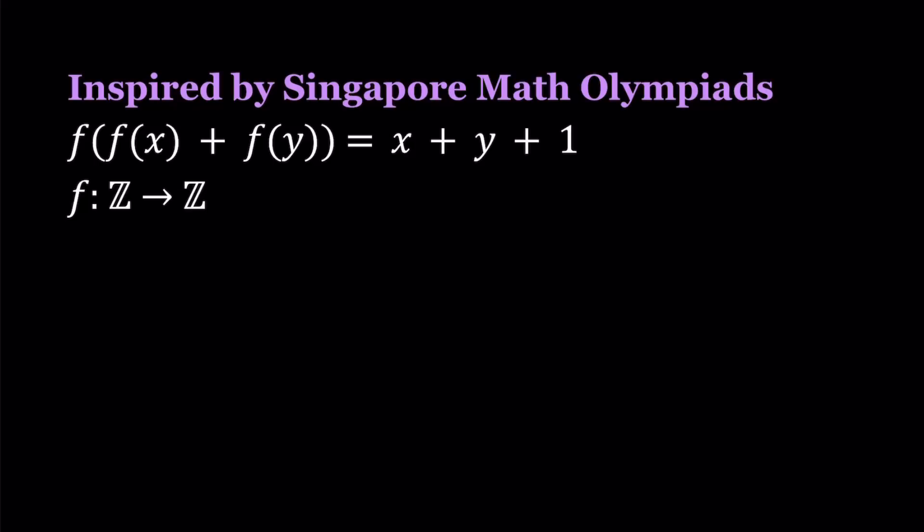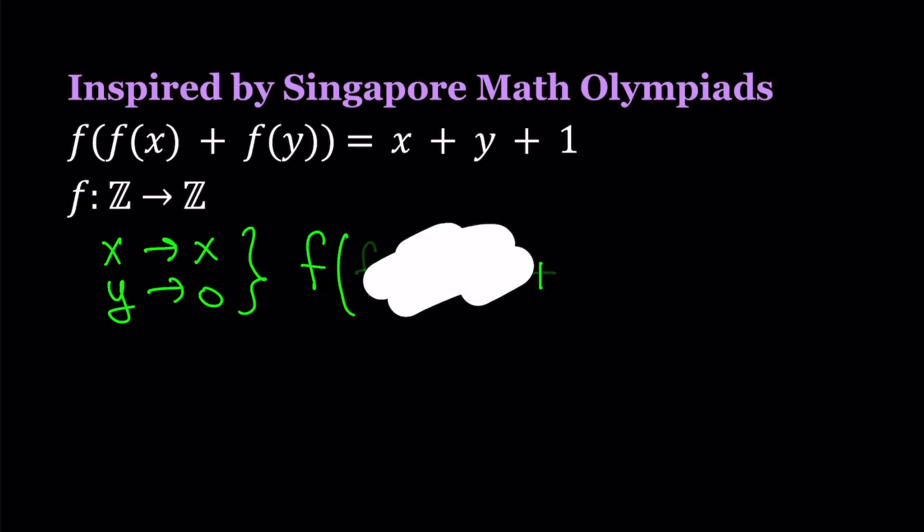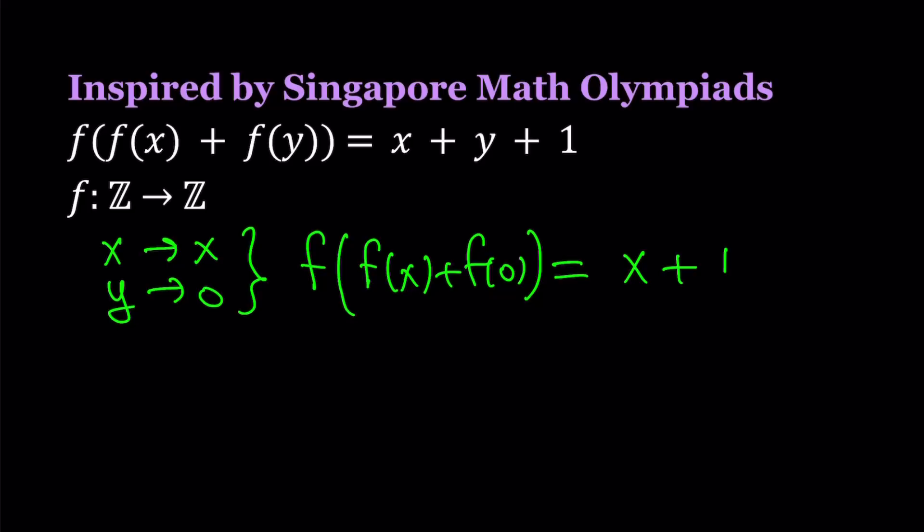So with functional equations, a lot of times we replace x and y with 0 or 1, or sometimes we set y equals x, or we set y equals f(x), or negative f(x), and so on. We do a lot of substitutions. I'll start by replacing x with x and y with 0. This is going to give us f(f(x) + f(0)), and on the right hand side, since y is going to be 0, we're going to get x + 1.